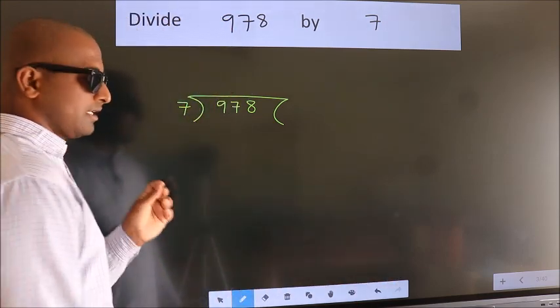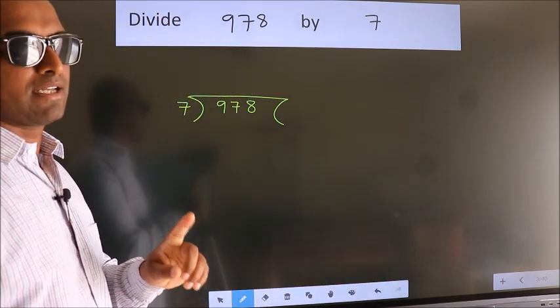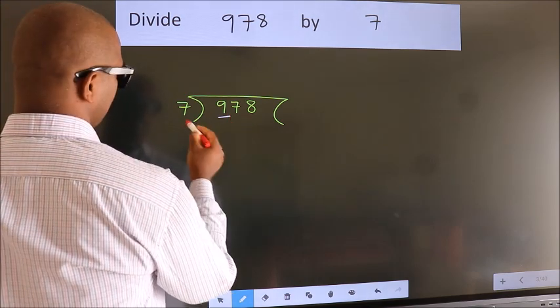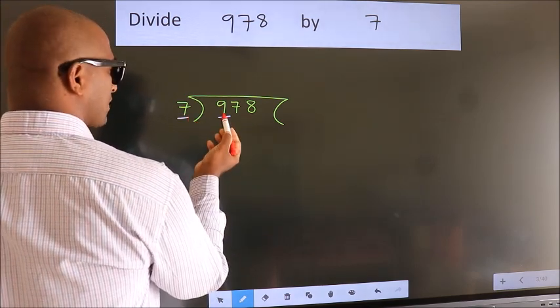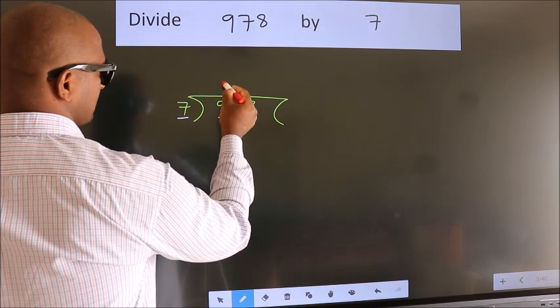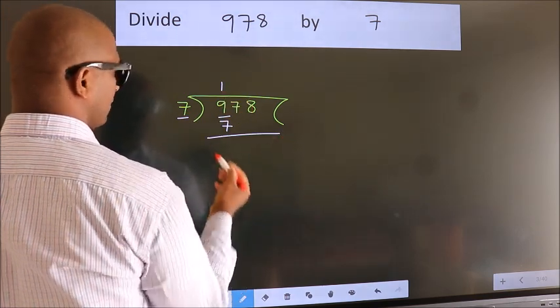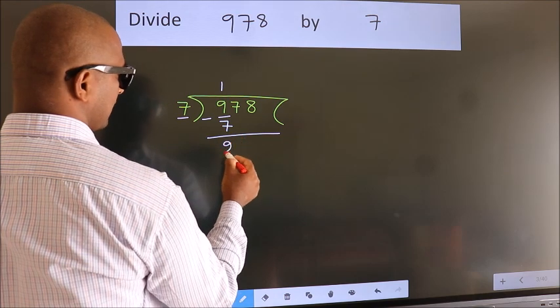This is your step 1. Next. Here we have 9. Here 7. A number close to 9 in 7 table is 7 1s 7. Now we should subtract. We get 2.